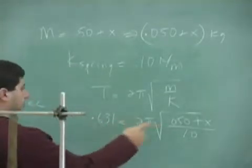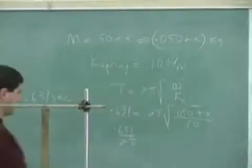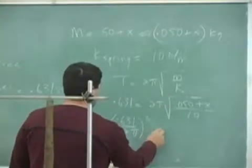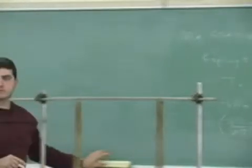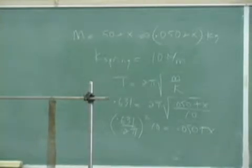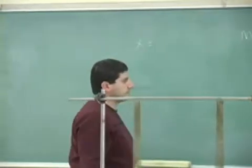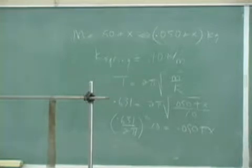So I'll bring the 2π over here, square both sides, and then cross multiply. So I get 0.631 divided by 2π, and then square that, multiply it by ten, and then that's 0.050 plus X. So tell me, and then from there, you subtract 0.050, and then you solve for X.